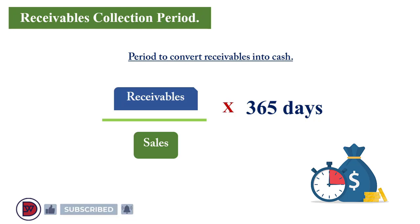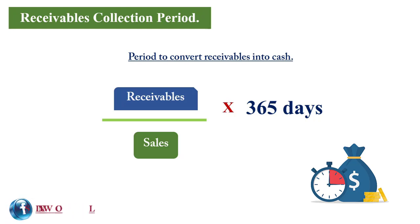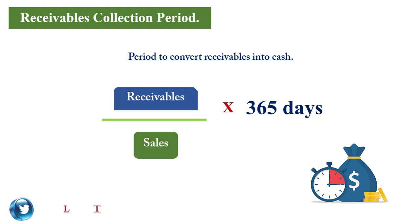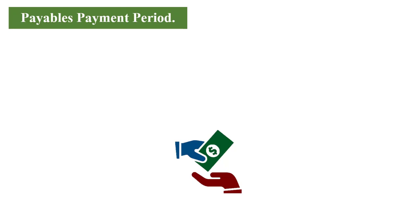If the receivables collection period is higher, the business needs to investigate the reason. It could be that a large quantity of goods was sold to a customer deliberately due to a good opportunity — which would be acceptable — but if the business is being sloppy in its credit control operations, that has to be revisited.